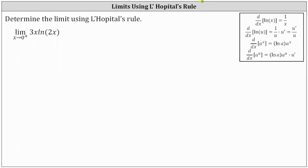We're asked to determine the limit using L'Hôpital's rule. Let's begin by checking the form of the limit. As x approaches 0 from the right, 3x approaches 0. 2x also approaches 0 from the right, and as the inputs into the natural log function approach 0 from the right, the function values decrease without bound and approach negative infinity. The limit is in the form of 0 times negative infinity.